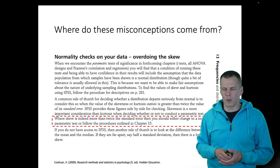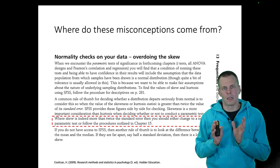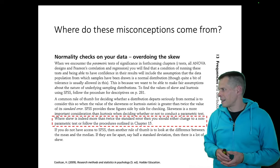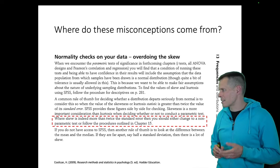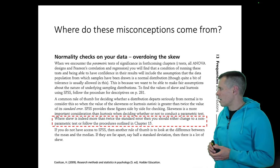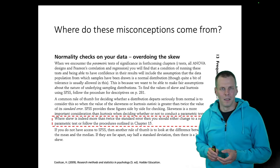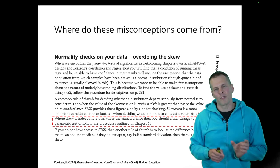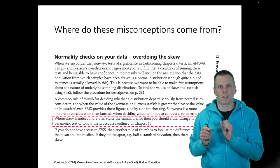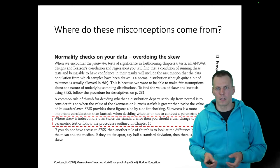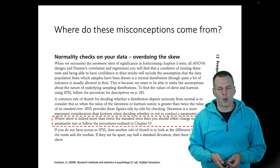Another example is Coolican, used in some psychology departments as a research manual for master's students. It explicitly says that when skewness is more than twice the standard error, you should either change to a non-parametric test or follow procedures outlined in another chapter. Whether you use a parametric or non-parametric test does not depend on the distribution of the variables — it depends on whether you're testing means or medians, not on the distribution.